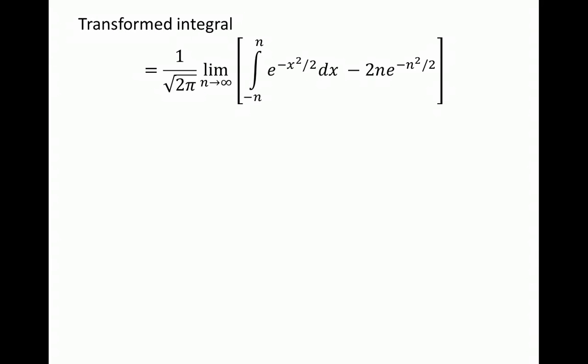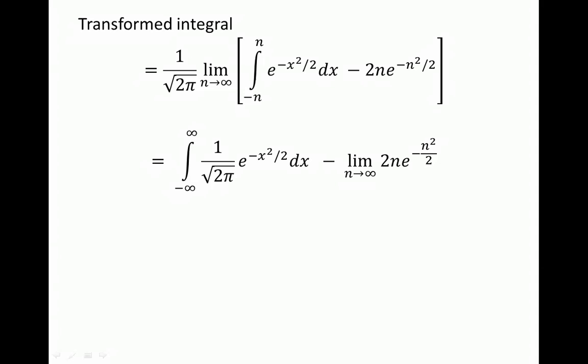This is our transformed integral that we want to compute. Because it is just subtraction, we can split this term apart. Because we have the limit as n goes to infinity, we can express it back in terms of infinity by plugging in infinity for n. So we have the integral going from minus infinity to infinity, we put the constant inside the brackets, and we keep the second term expressed as a limit in n as n goes to infinity.